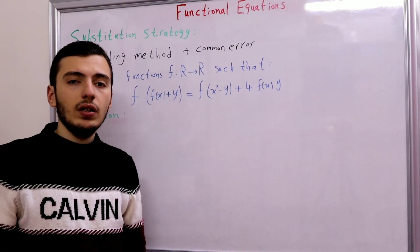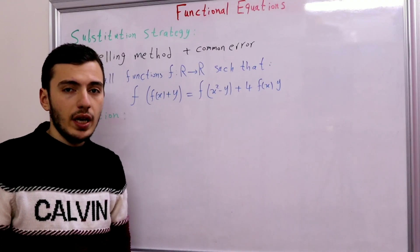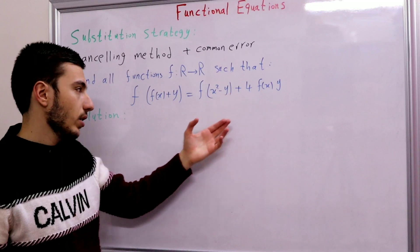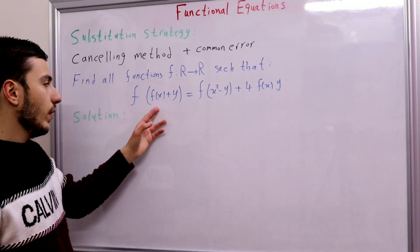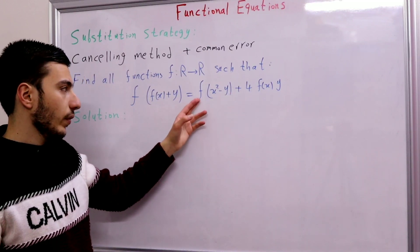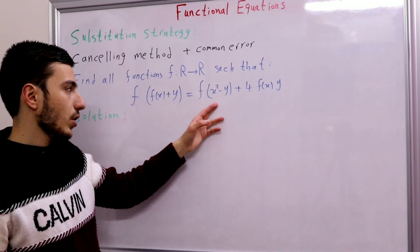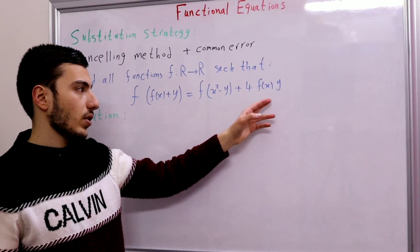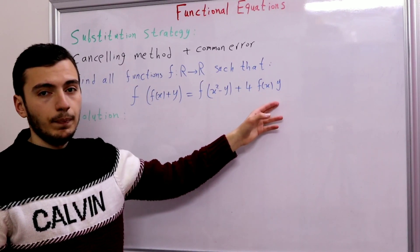So we need to find all functions f from ℝ to ℝ such that f(f(x) + y) = f(x² - y) + 4·f(x)·y.